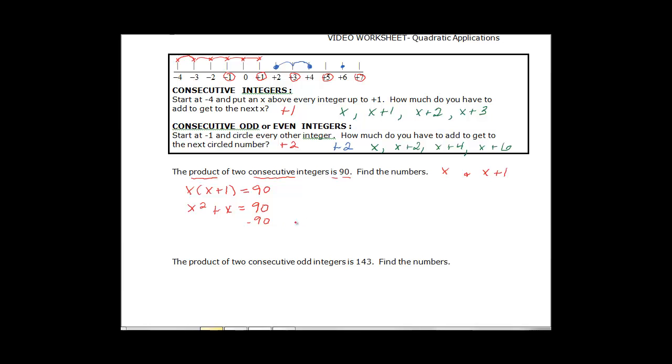So we have to subtract the 90 from both sides. So we have, I'll do it over here, X squared plus X minus 90 then equal to 0.